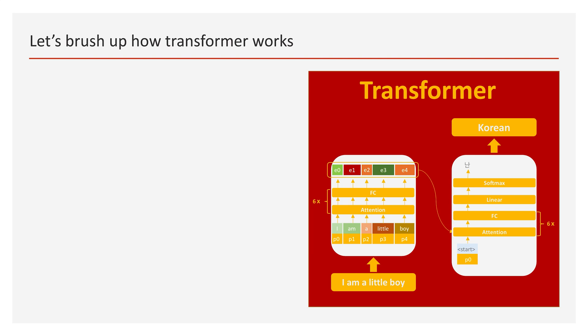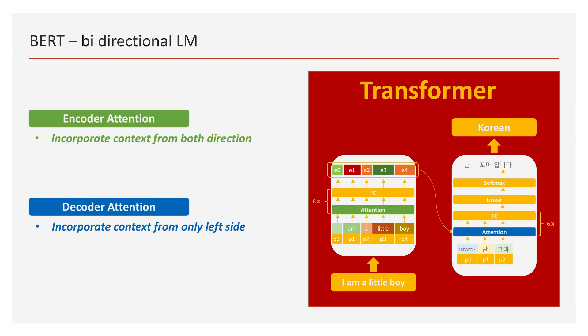The decoder generates output using the encoder's output and a start special token, generating output from left to right. The decoder keeps generating output left-to-right using previously generated decoder output and encoder output. Until the decoder outputs a special end token, the decoder also repeats the attention-to-fully-connected-layer step six times. So we can see the Korean translated version of 'I am a boy.' Let's just remember: the encoder incorporates context from both directions, and the decoder incorporates context from only the left side.